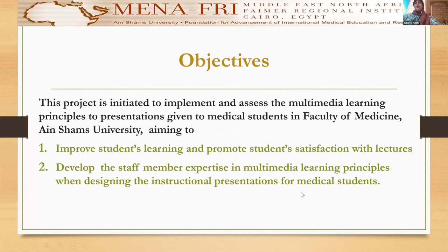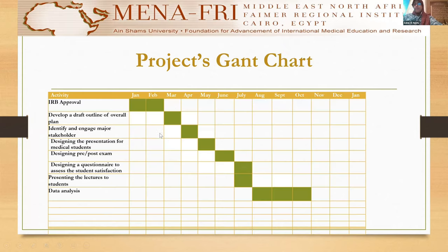This is the project's Gantt chart. By the end of February, the IRB approval was acquired. By the end of March, a draft outline of the overall plan was constructed.